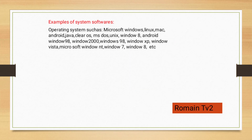An operating system is an example of system software. Examples of operating systems include Microsoft Windows, Linux, Android, Java, MS-DOS, Unix, Windows 8, Windows 98, Windows 2000, Windows XP, Windows Vista, and Windows 7.